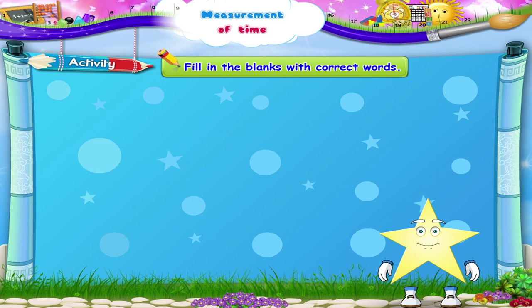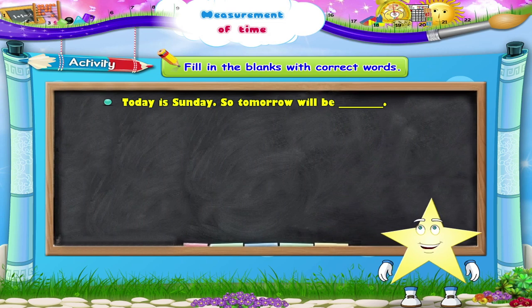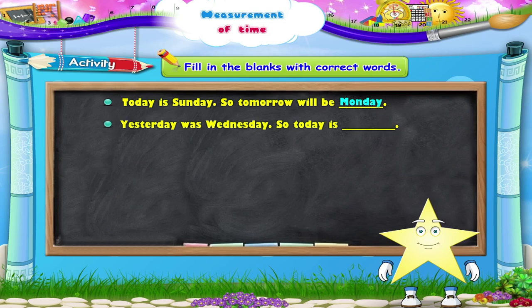Fill in the blanks with correct words. Here is the first question: Today is Sunday, so tomorrow will be blank. Tomorrow will be Monday. The next question: Yesterday was Wednesday, so today is blank. It is Thursday.